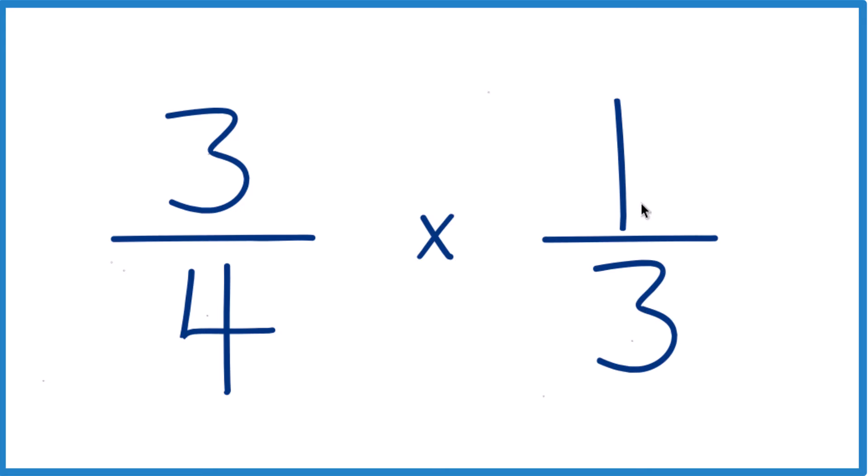If we take the reciprocal of one-third, if we move the three up to the top and the one down to the bottom, that's the multiplicative inverse or the reciprocal for one-third.